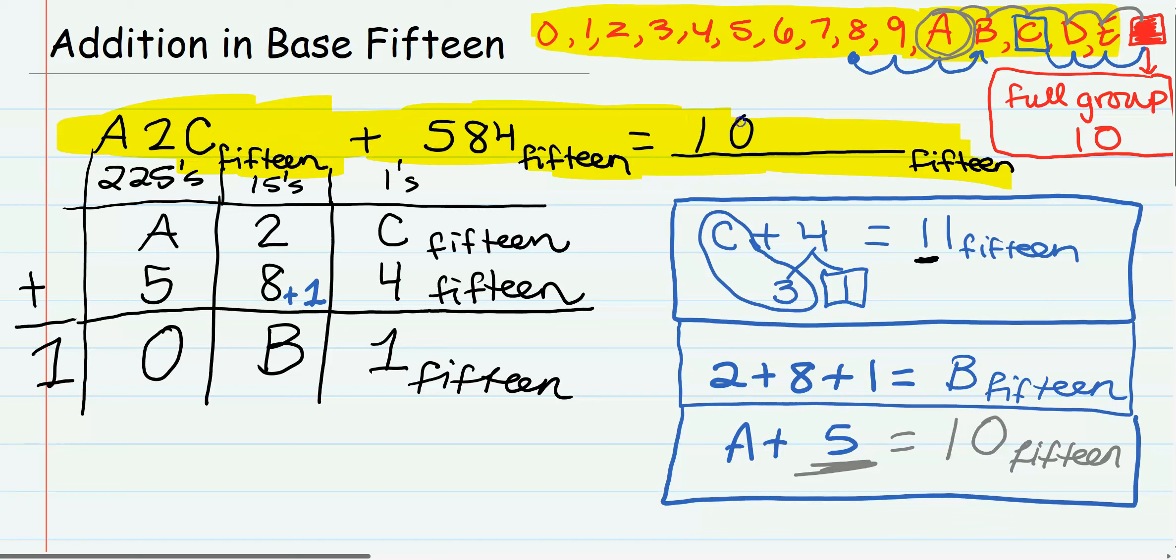So don't let bases bigger than 10 confuse you. The process is the same. If you're in base 15, you're making groups of 15 when you're adding. If you're in base 8, you're making groups of 8 when you're adding. If you're in base 5, you're making groups of 5. And of course, if you were in the traditional base 10, you would make groups of 10, and it works the same way in all number systems.